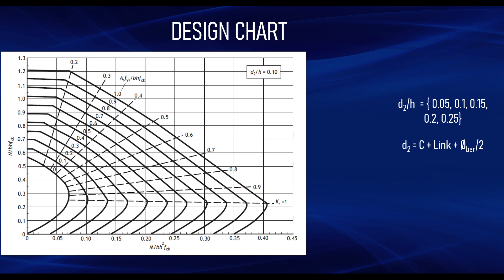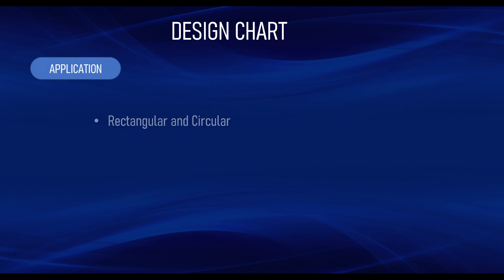Before looking at a worked example, let us consider the applicability of the design chart, because certain conditions must be met. First, the design chart is used to design rectangular and circular columns. If your column is another shape, you will not be able to use the standard design chart — you would need to construct your own charts based on the design formulas, or use the design equations directly.